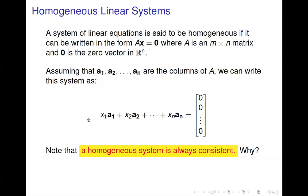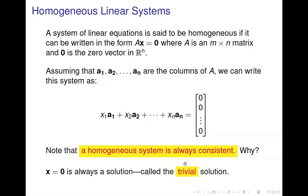How can that happen? If you set each one of these X values equal to zero, then you do a linear combination and you'll end up with the zero vector. Therefore, a homogeneous system is always consistent. X equals zero — all X values equal to zero — is always a solution. And since it's always a solution and it's obvious, we call it the trivial solution.